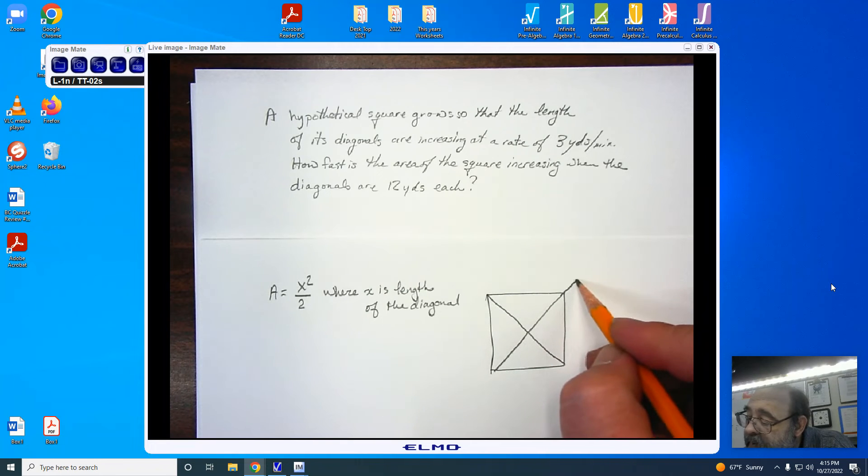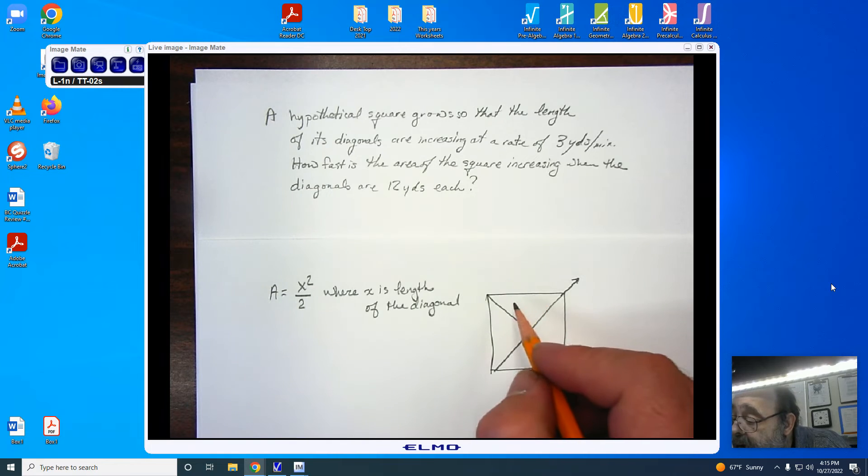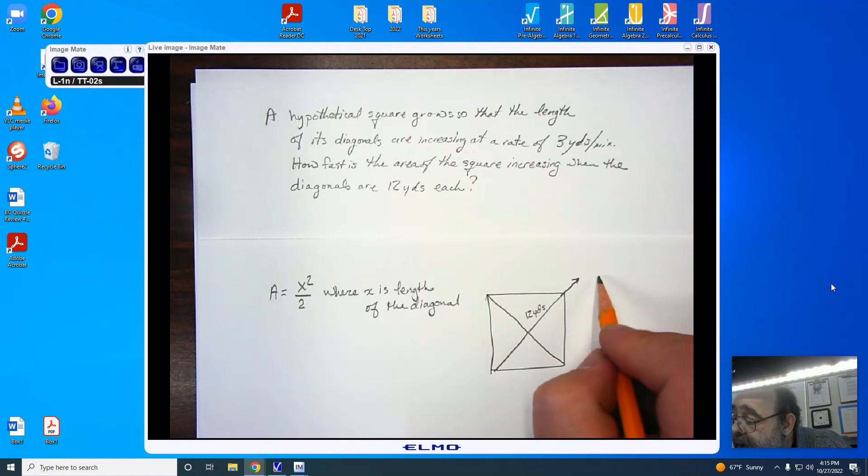Just so you know, this is my picture. Here, the diagonals that are expanding, so these diagonals are moving outward. Originally, they start off with diagonals are 12 yards each. So we have 12 yards, and the rate is increasing at 3 yards per minute.